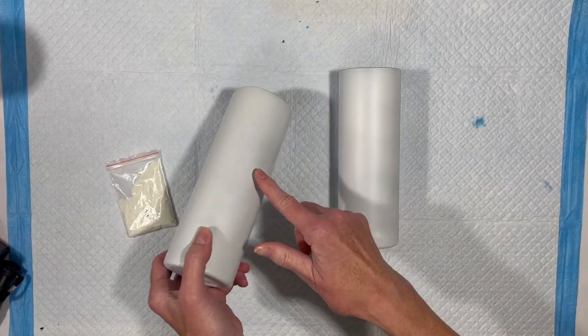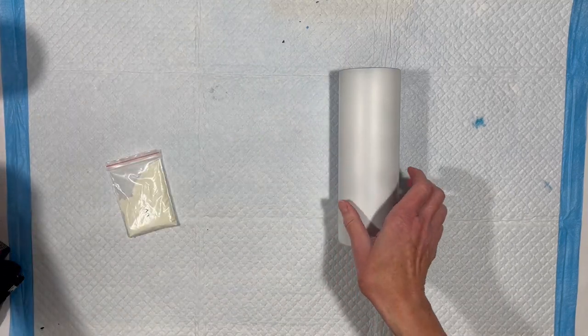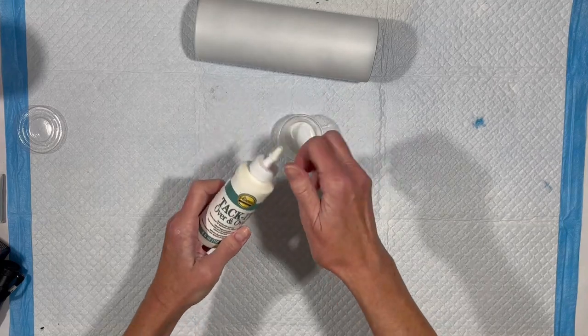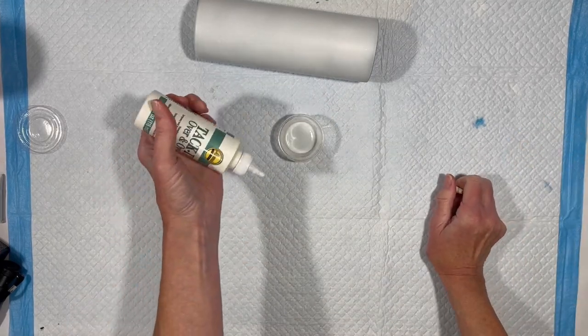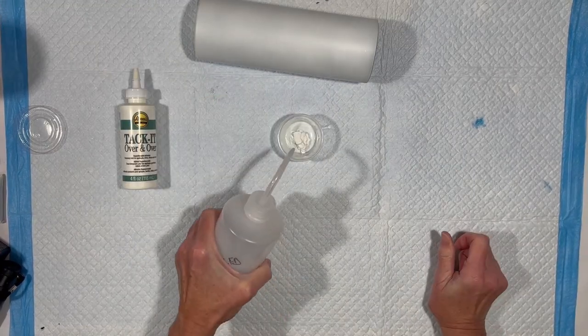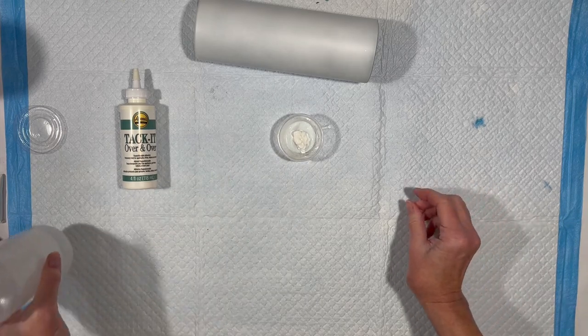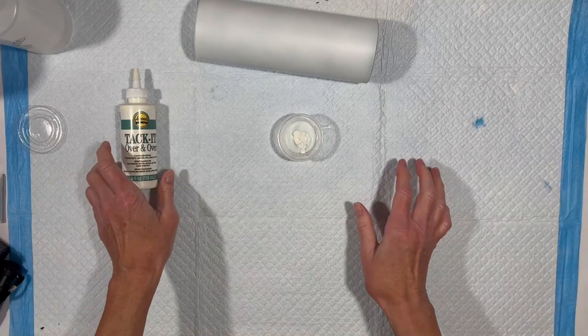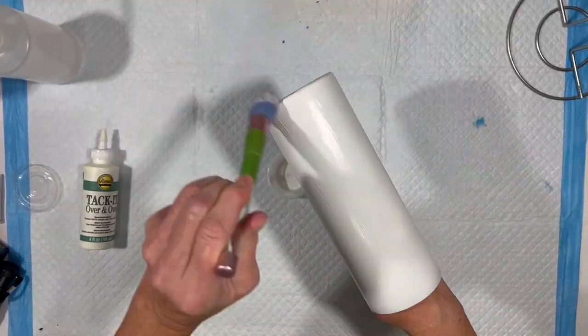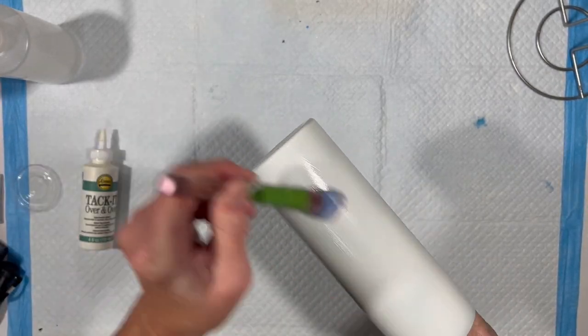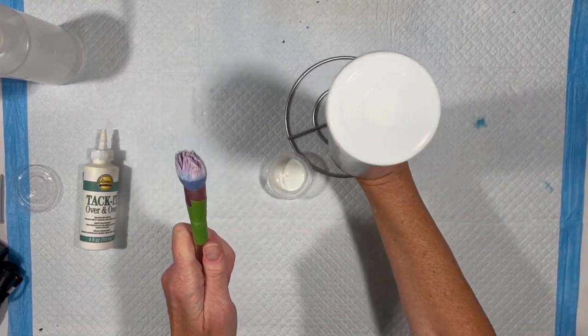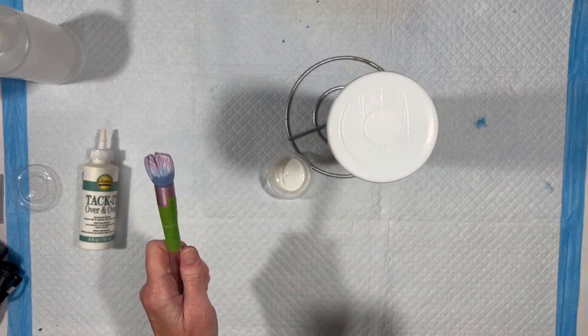This one we are going to try and put the glow powder onto the cup with the Tack-It method. So this is Aline's Tack-It over and over. I'm just going to squirt some in there, add a little bit of water. The whole reason for diluting it with water is to make it easier to get a smooth even layer on your tumbler. So that's one layer. I'm going to wait about 15 minutes and then come back and apply a second layer. And then I will bring you back when both layers are dry but very tacky and we will apply the glow powder.